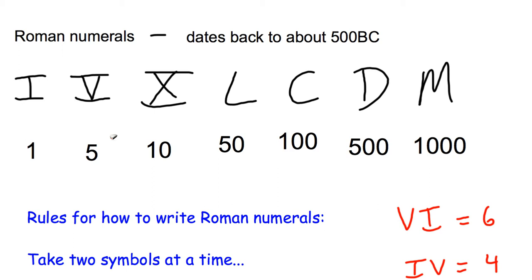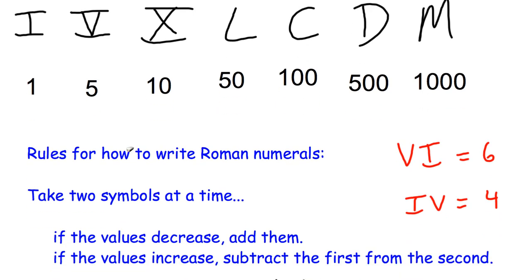So what I'll do is go through rules for how to write Roman numerals. We will always take two symbols at a time. And if looking at two symbols, if the values decrease, you add them. If the values increase, you subtract the first from the second.